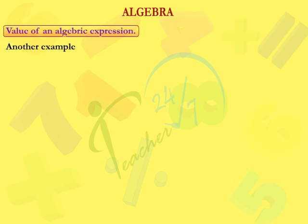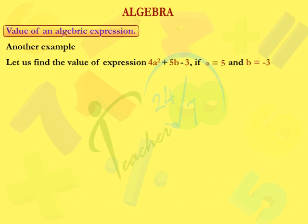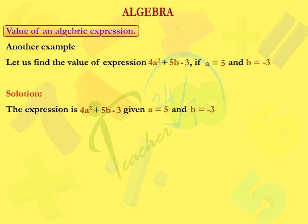Another example. Let us find the value of the expression 4a square plus 5b minus 3, if a is equal to 5 and b is equal to minus 3. Solution. The expression is 4a square plus 5b minus 3. Given, a is equal to 5 and b is equal to minus 3.